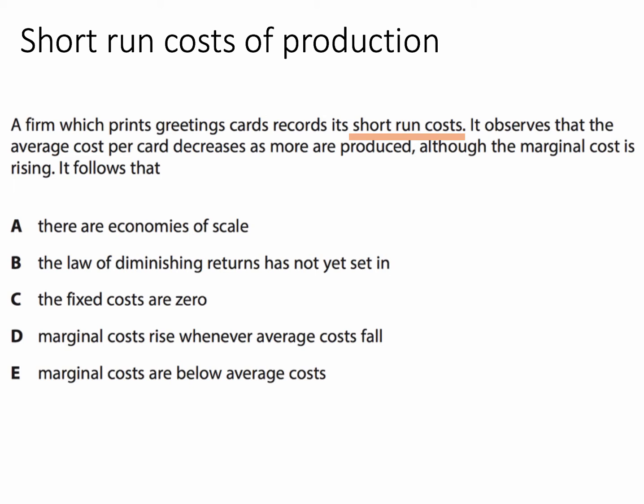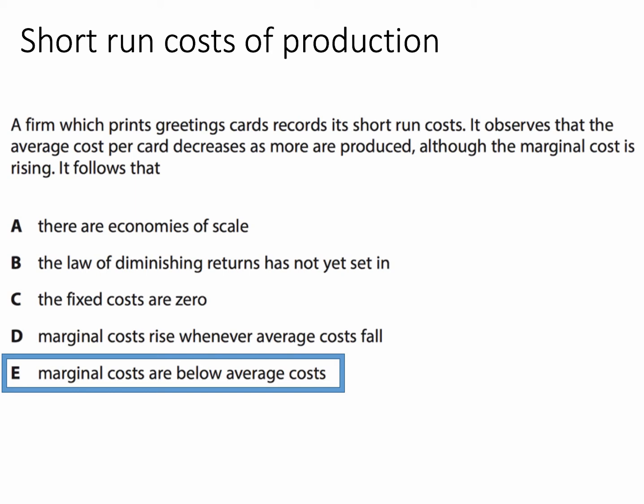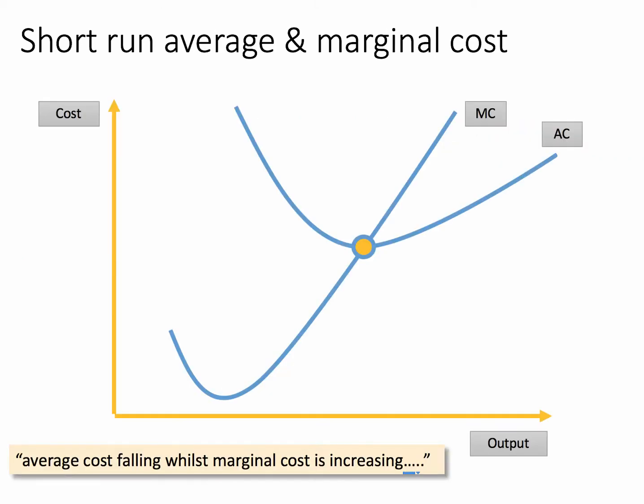I deliberately highlighted 'short run costs' for a particular reason — it'll help get the correct answer. The firm observed that the average cost per card is falling as they produce more cards, but the marginal cost of each extra card is rising. The correct answer to this question is E: marginal costs are below average costs. Low marginal cost is dragging down the average, even if the marginal is actually going up.